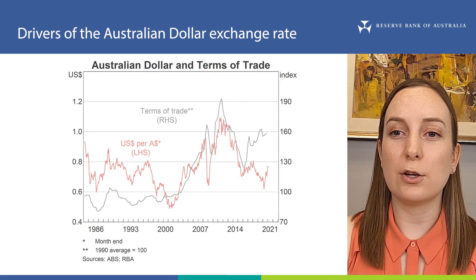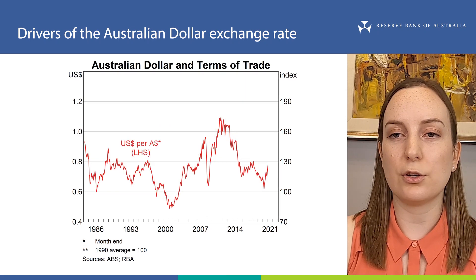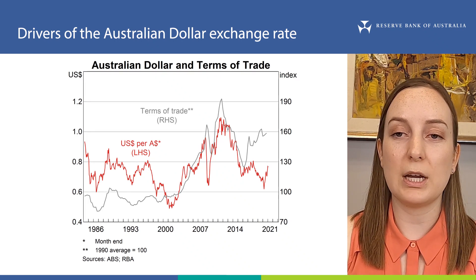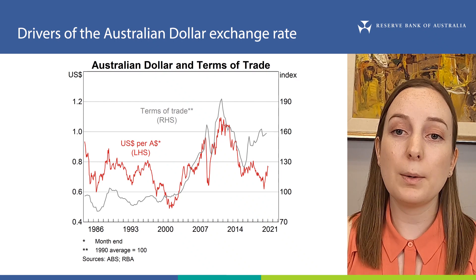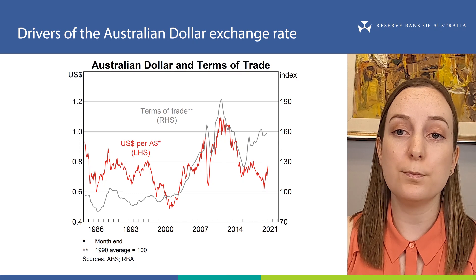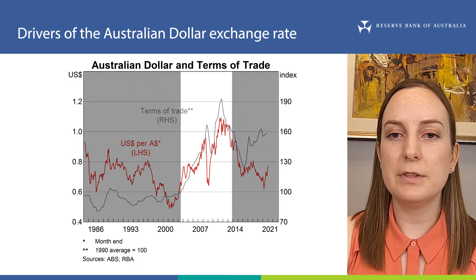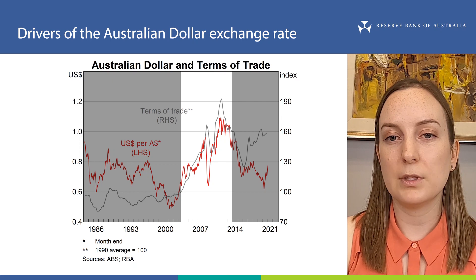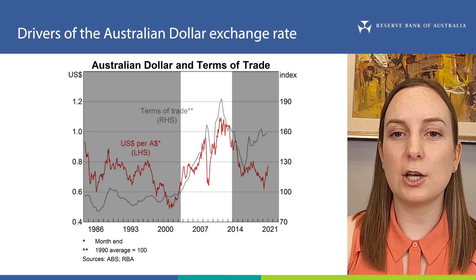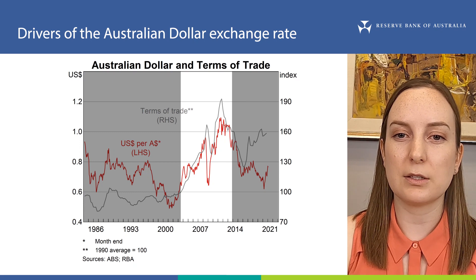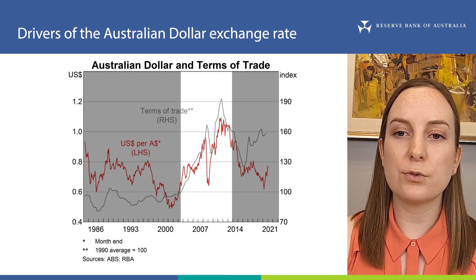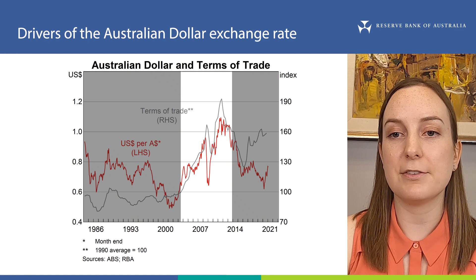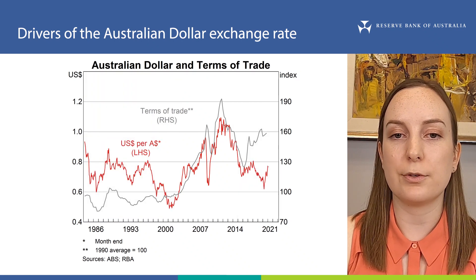This chart shows Australia's terms of trade in grey on the right and the Australian dollar against the US dollar in red on the left. You can see that the Australian dollar has tended to move quite closely with the terms of trade over a long period of time. One period in Australia's history where the relationship is quite noticeable was during the mining investment boom. This period saw a very large increase in commodity prices, including iron ore, from the mid-2000s through to 2013. Foreign investment into Australia increased to help increase the production capacity of Australia's resource sector. In response, demand for Australian dollars increased and the Australian dollar appreciated to a record high of $1.10 against the US dollar in 2011. We have a whole explainer on this topic that you can check out for further information.